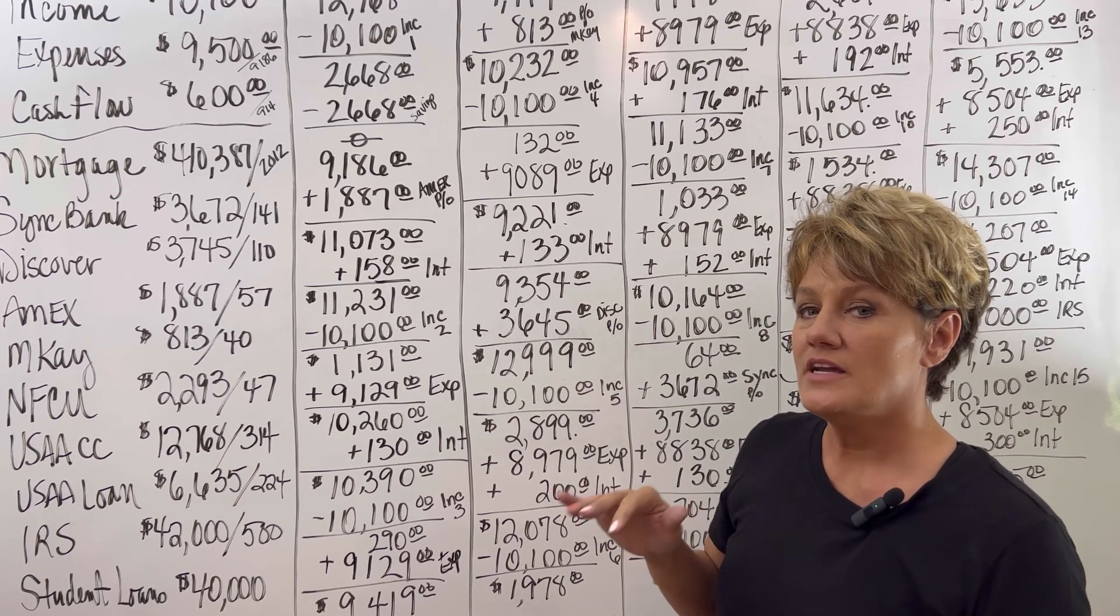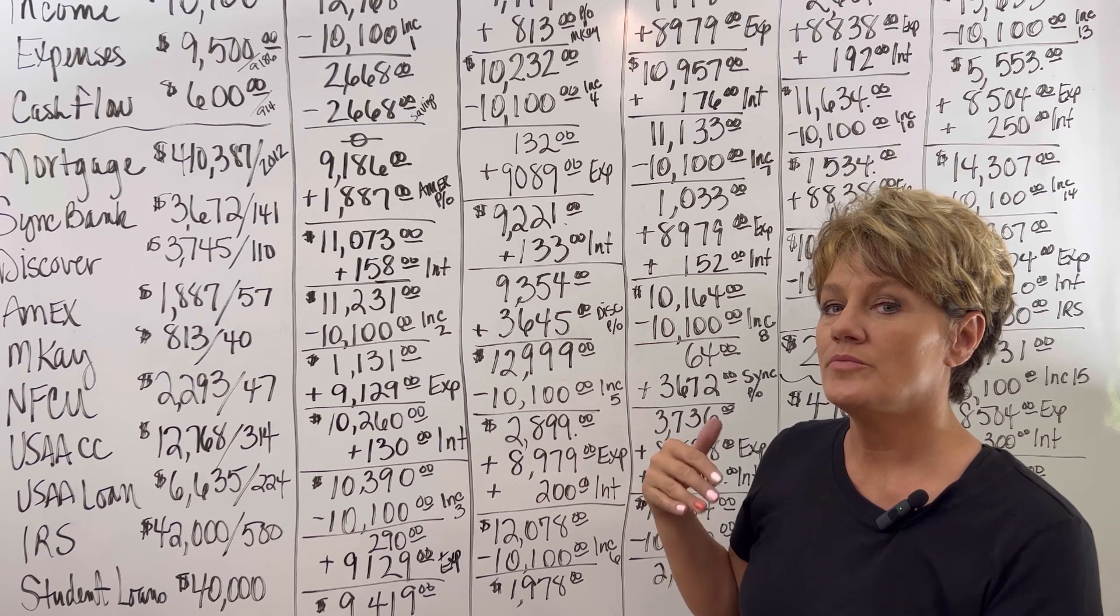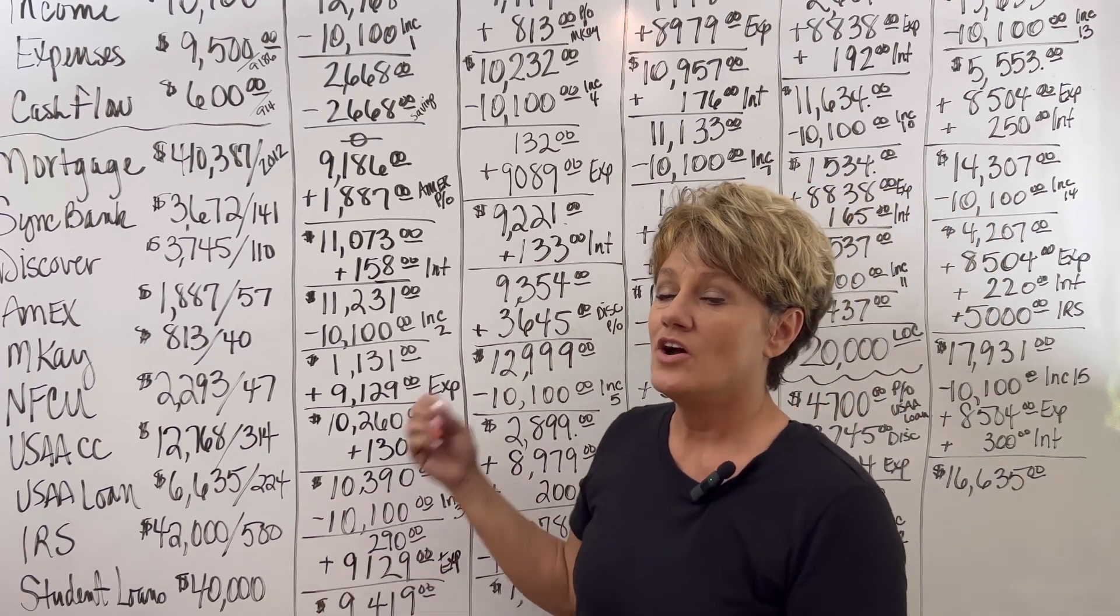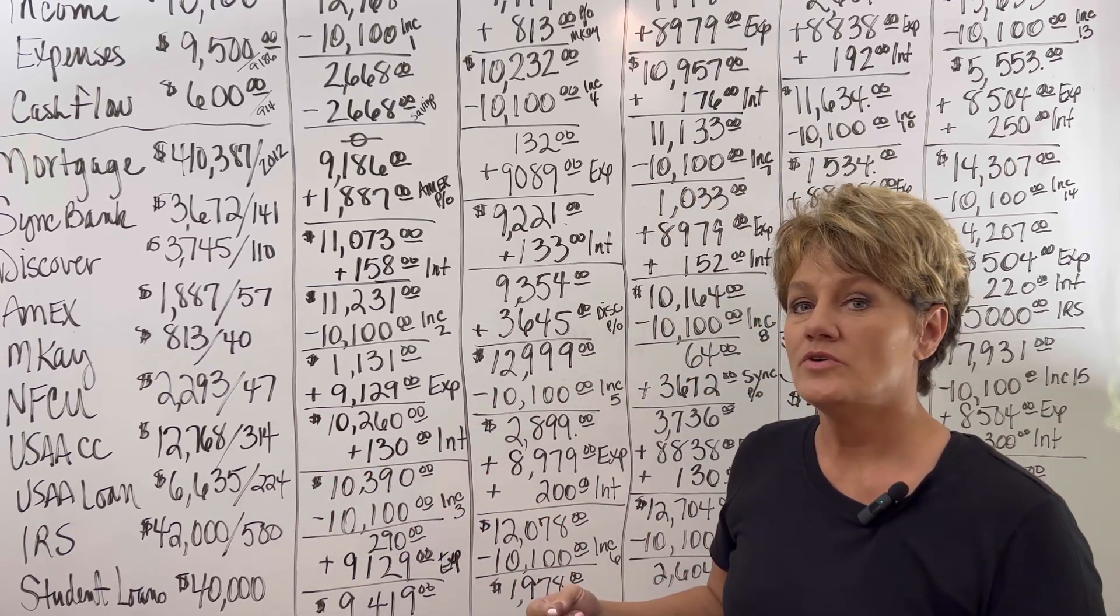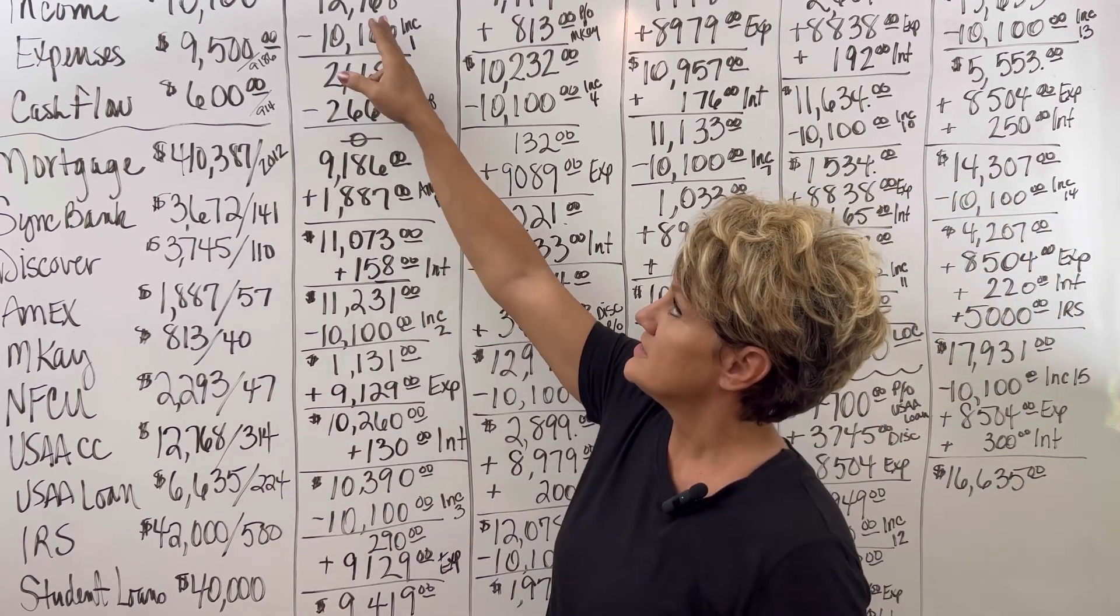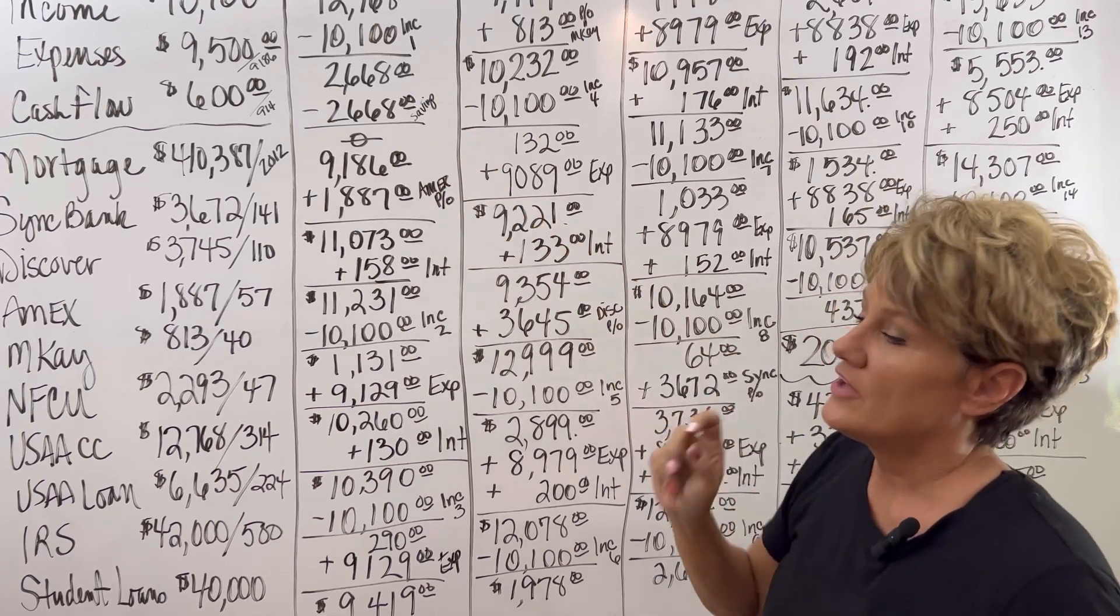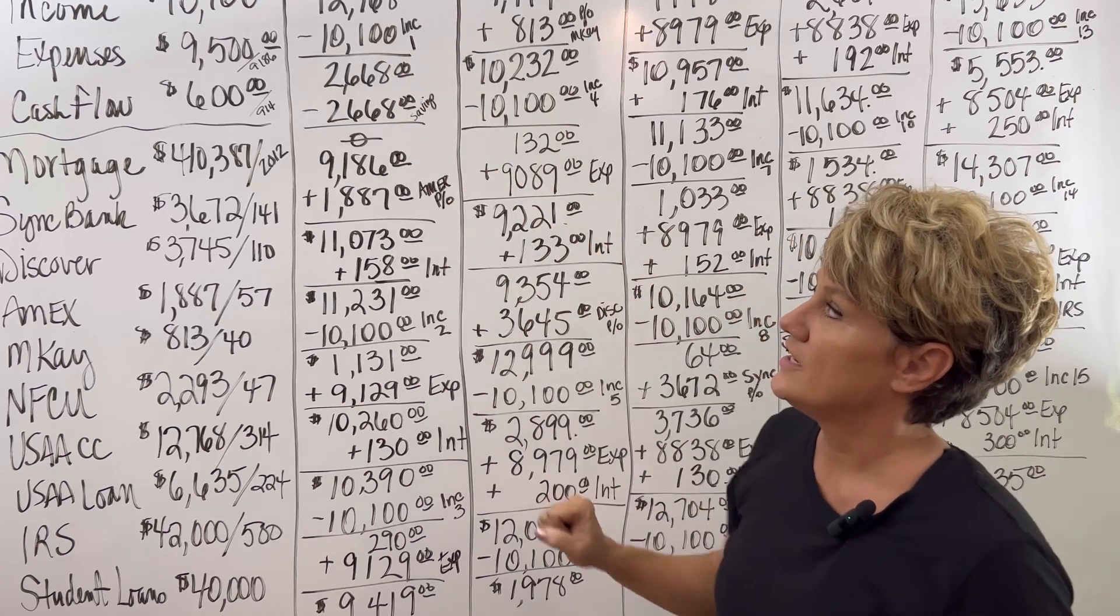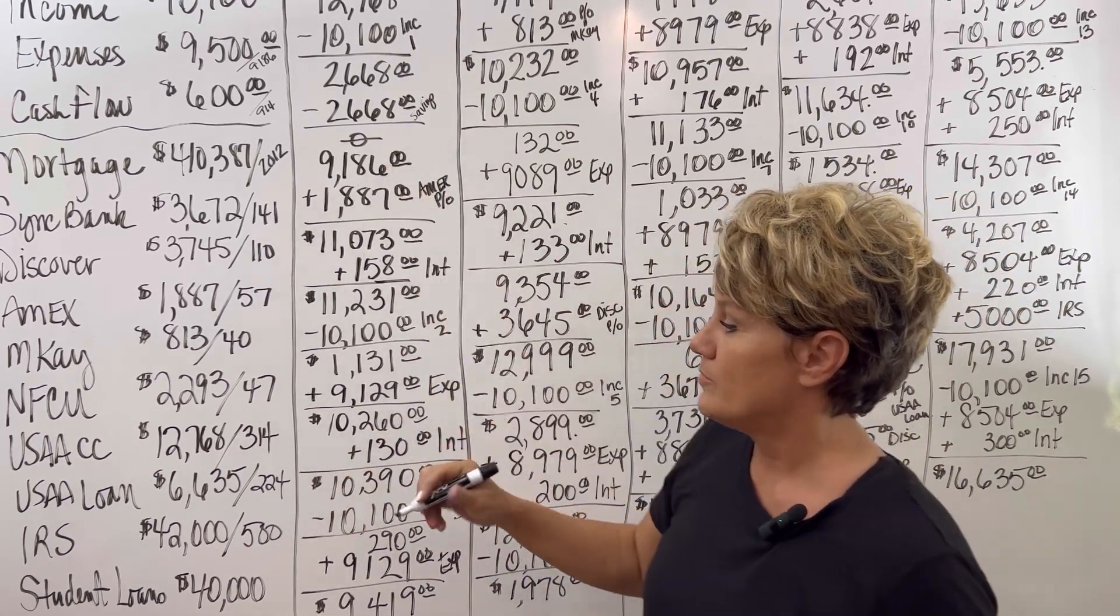So we are going to be dealing with mainly how to get rid of these credit cards very quickly so that we will be able to move into the IRS debt. They only have a USAA credit card right now that we're going to be using for a line of credit. So we're going to start with that $12,768. The income is going to go in and they have about $3,000 in savings. So we're going to go ahead and pay off the balance right here. So now the USAA credit card debt is to a zero balance.